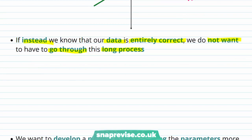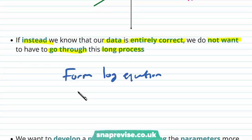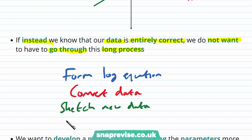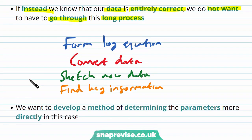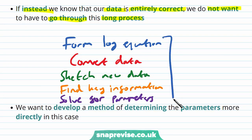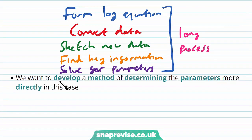The process involves: forming a log equation, converting our data from normal to logarithm form, sketching our new data to form the straight line, finding key information like the intercept and the gradient, and then finally solving for the parameters. This in general is a long process and we'd like to avoid it if possible. We want to develop a method of determining the parameters more directly in this case.